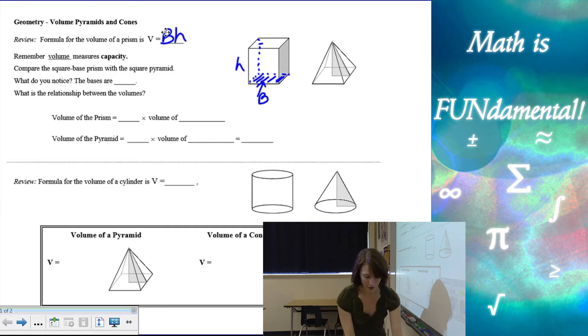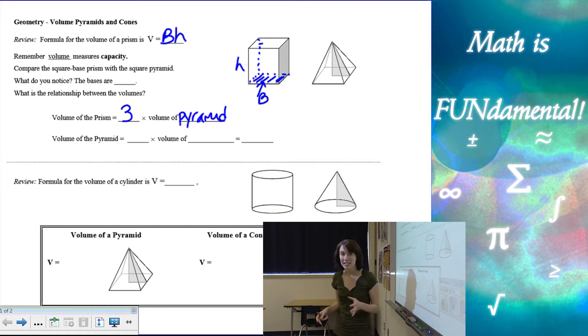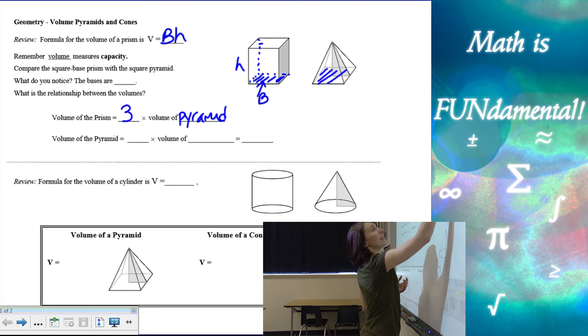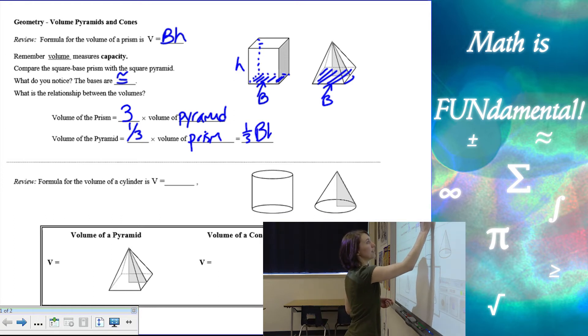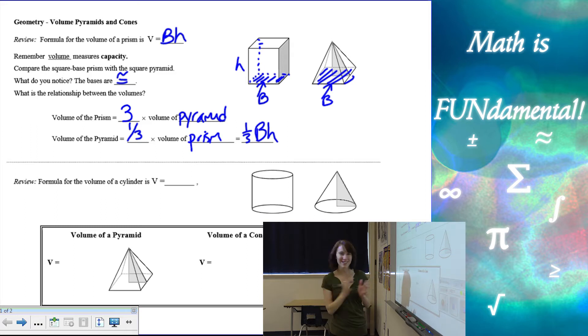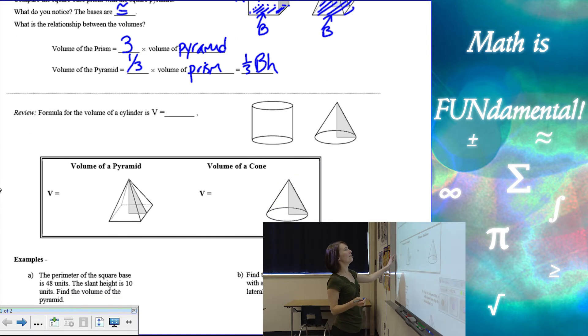So from there, hopefully you can see that a volume of a prism is three times the volume of the pyramid, as long as the bases of the pyramid and the prism have to be congruent. Another way to think about it, the volume of a pyramid would be one-third the volume of the prism, or one-third area of the base times the height. So a little magic trick for you guys, math magic. All right, so there's the volume of our pyramid.